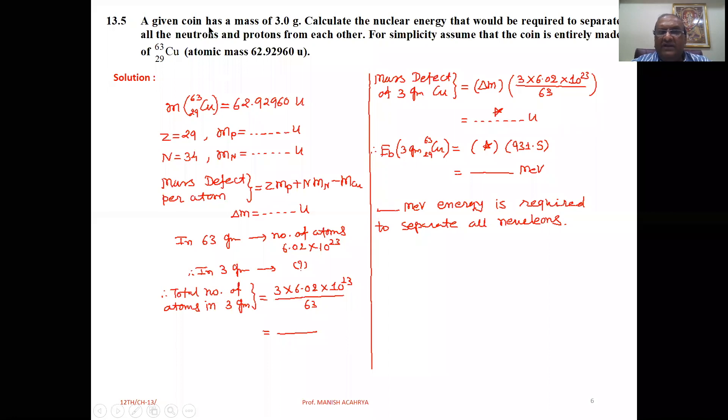Now here, the coin has a mass equal to 3 grams. So first of all, we have to calculate the mass defect for one atom. Then we have to calculate the total number of atoms in 3 grams, and then after, we have to calculate total mass defect.